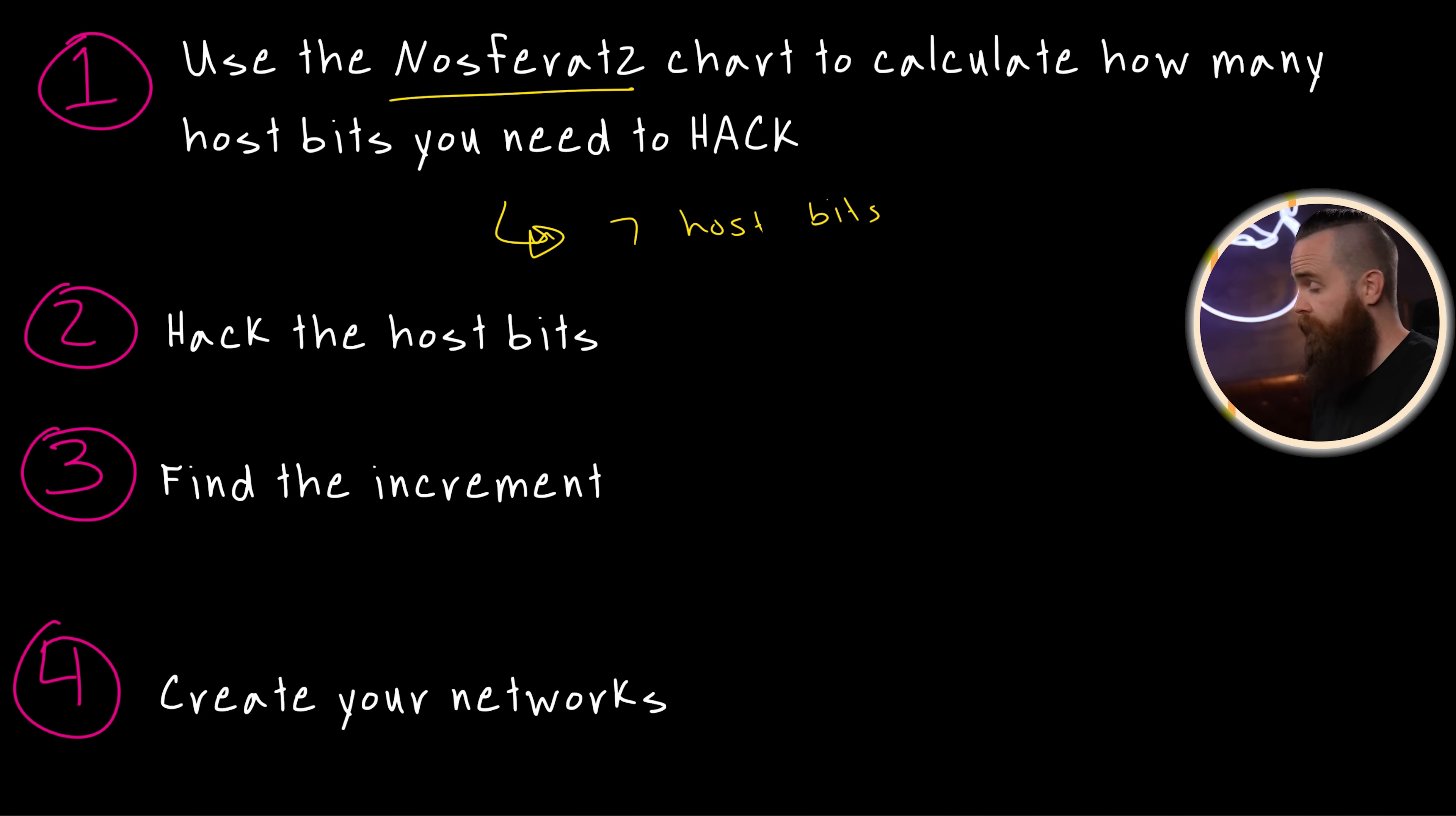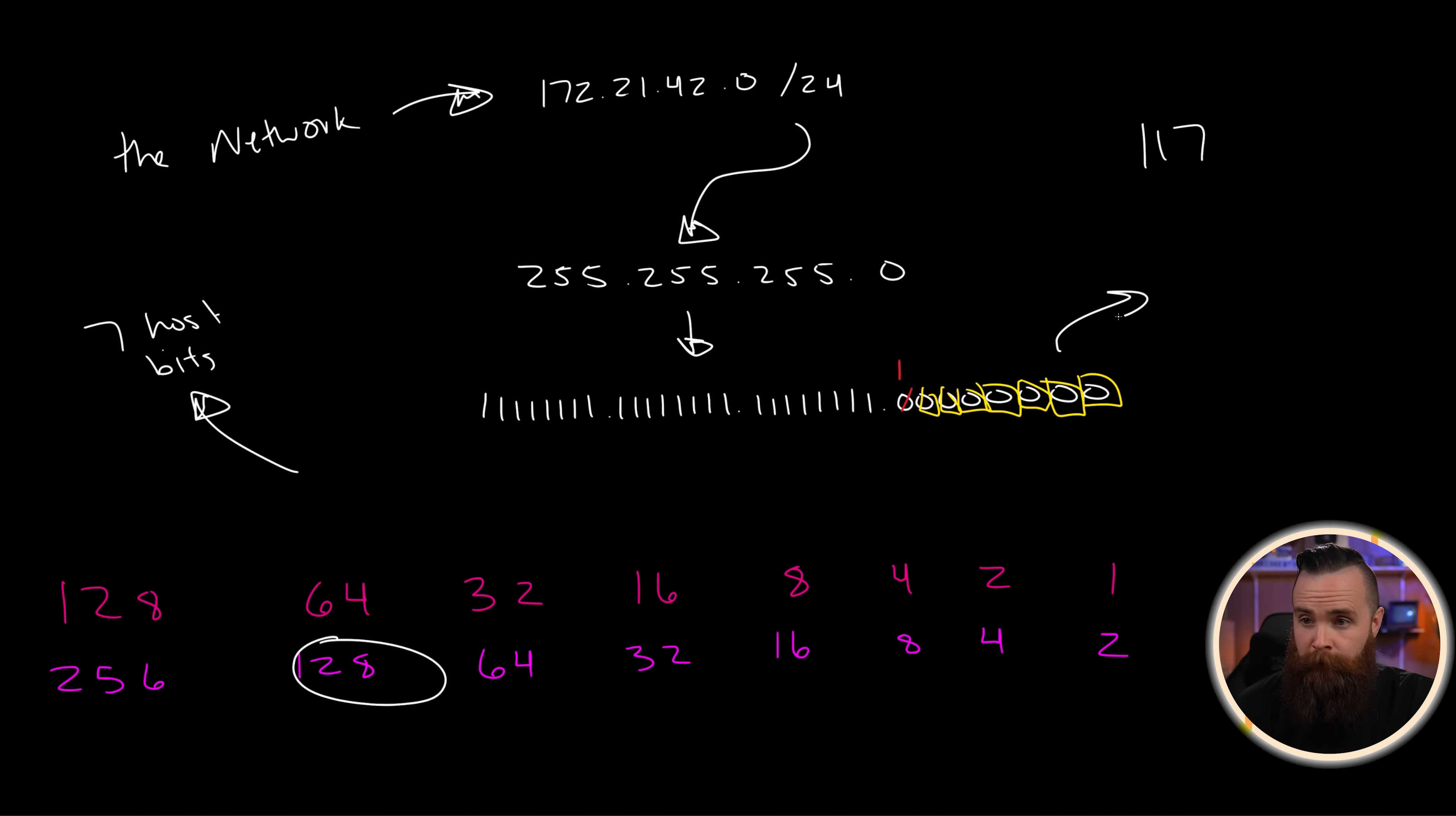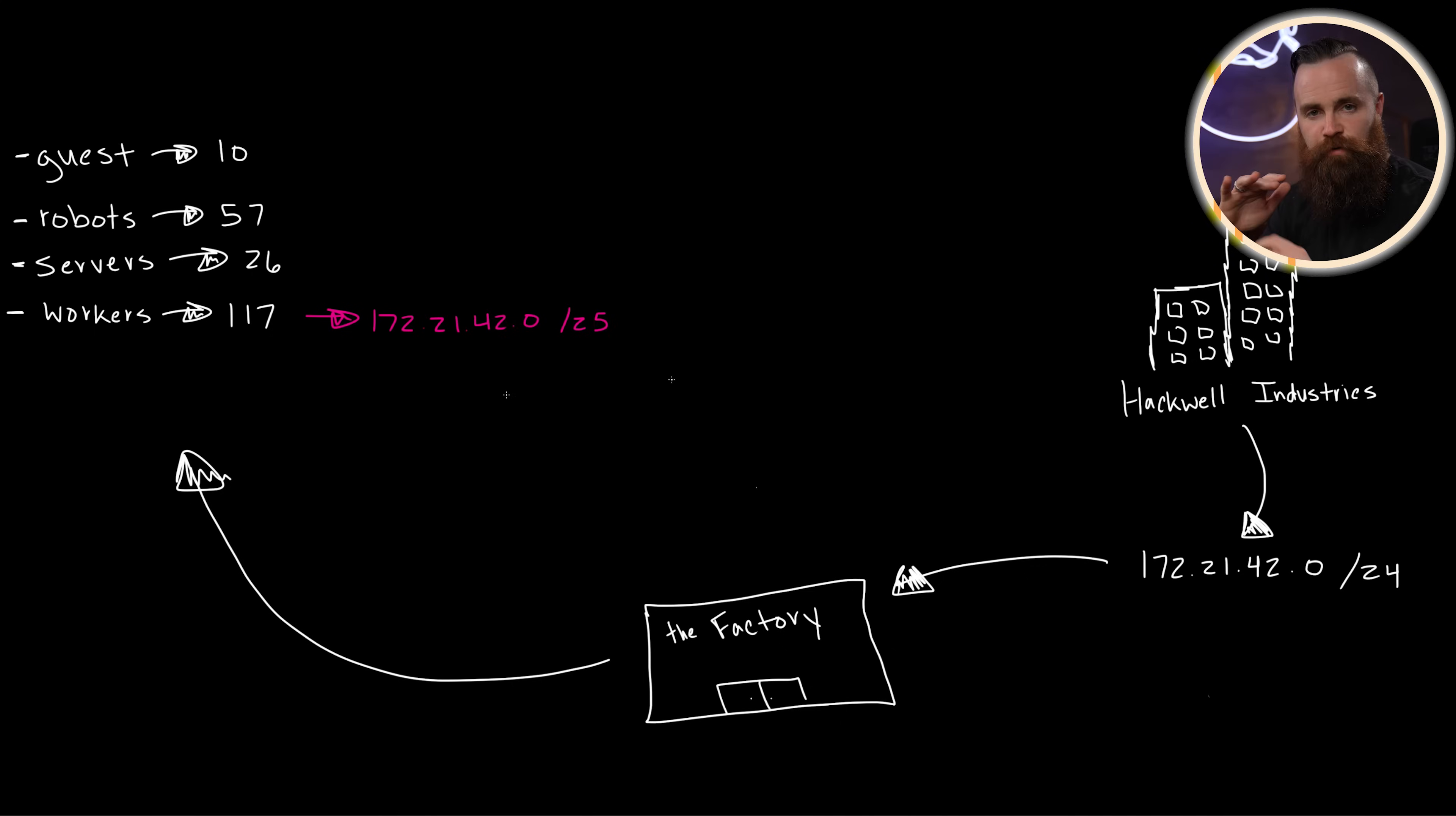We're going to hack seven host bits. And because we're subnetting based on host requirements, we're going to go to the upside down and save the host. And right now I'm going to go very fast because you've already been here before. I don't want to waste your time. So in our current mask, we're going to save every host but the last one, we're going to let him get hacked, giving us our new subnet mask, the slash 25. And in dotted decimal, here's what we look like. And if we throw that last octet onto the Nosferatu chart, we can see our increment is 128. Let's build our network. We've been here before: 172.21.42.0 through 172.21.42.127. And that's the network for our workers.